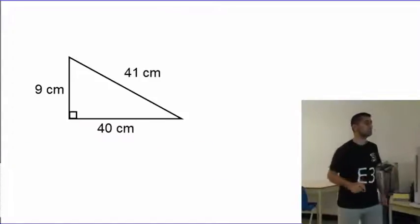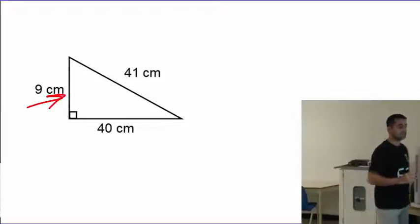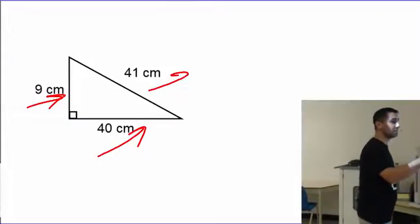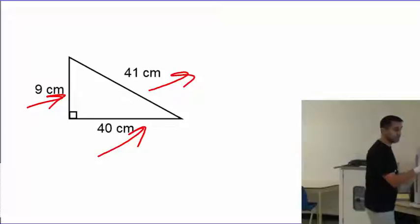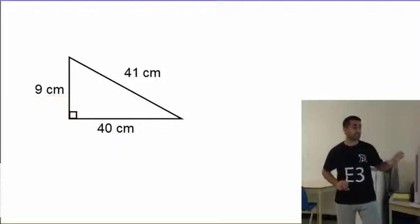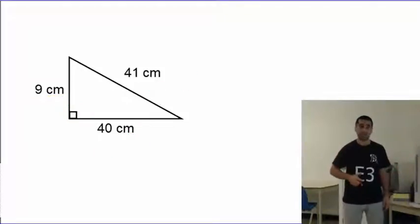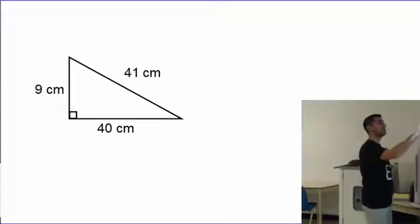So here is a triangle. As you can see, this part is 9 centimeters, that part is 40 and this part is 41. And from this I can see that there is a little triangle right at the corner. So this clearly tells me that the triangle I am looking at is a right triangle. For sure, if the person who made the question didn't make a mistake, that's a right triangle.